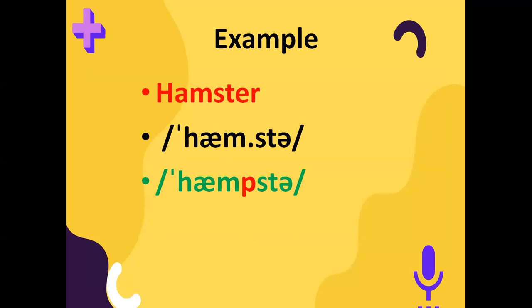The example is 'hamster'. 'Ham' has the primary stress, so S is not part of the stressed syllable, and S is coming after M — M is a nasal sound and S is a voiceless fricative. When we pronounce it slowly — 'hamster' — it's fine, but when we speak fluently at fast speed, a P sound will be produced and it will become 'hampster'.